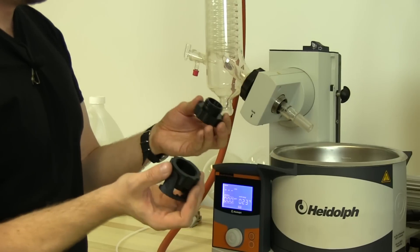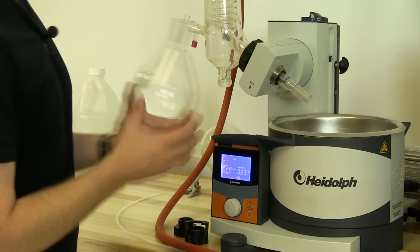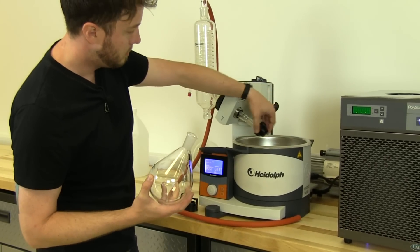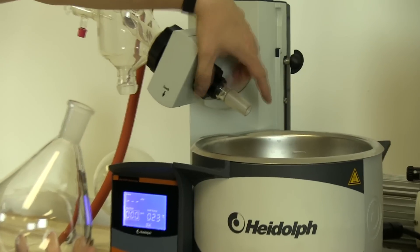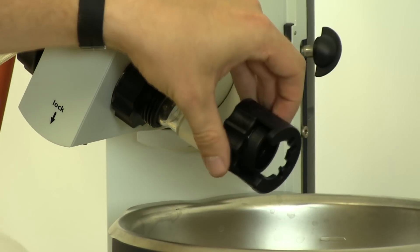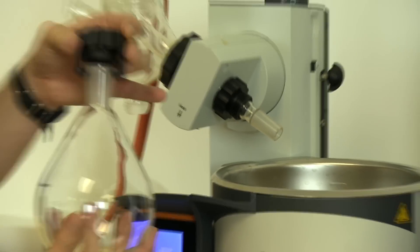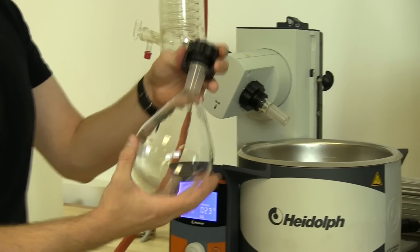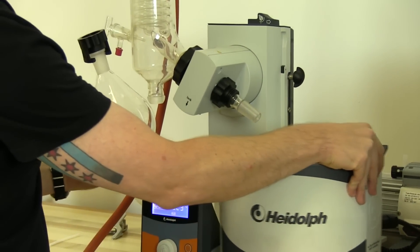We have the two-piece connector for attaching the evaporator flask. So we have this evaporator flask here, the 1000 mil. Thread this on. You can assemble this in one piece, but this is a much easier way to work with it. Lock it on and you have a little bit of room to work with as far as putting it onto the vapor tube.